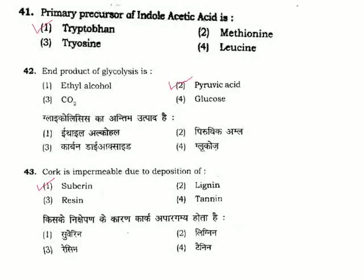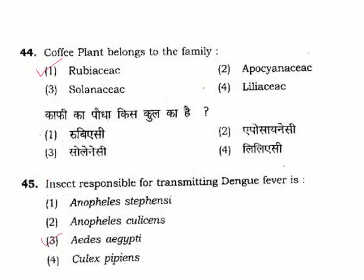Question 43: Casparian strip is impermeable due to deposition of — the Casparian strip is impermeable, meaning water cannot pass through it, because suberin is deposited. Correct answer is Option 1. Question 44: Coffee plant belongs to the family — coffee plant is a Rubiaceae family member. Correct answer is Option 1.